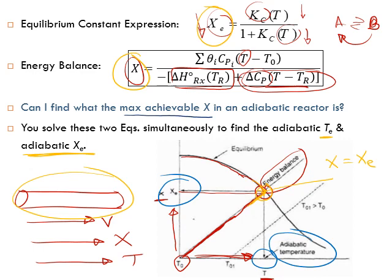These are thermodynamic variables only — found purely through thermodynamics, without involving any rate of reaction. The energy balance equation comes from thermodynamics and involves no rate, and the equilibrium expression also comes from thermodynamics. So by solving these two equations simultaneously, you can get the adiabatic equilibrium temperature and adiabatic equilibrium conversion.